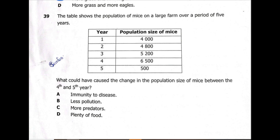Question 39: the table shows the population of mice on a large farm over five years. What could have caused the change in population between the fourth and fifth year? In year four the population was about 6,500; in year five it dropped to 500 — a reduction of about 6,000. Option A — immunity to disease — would cause the population to increase. Option B — less pollution — is positive for population increment. Option C — more predators — is our answer. There should have been more predators feeding on mice.